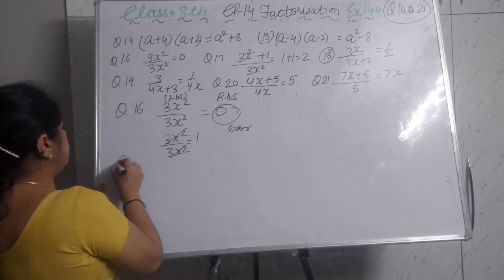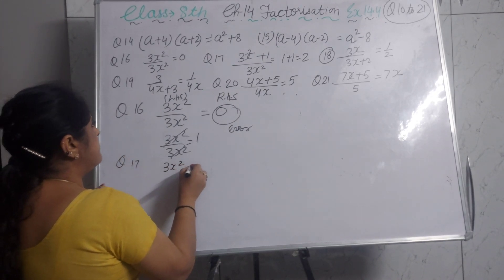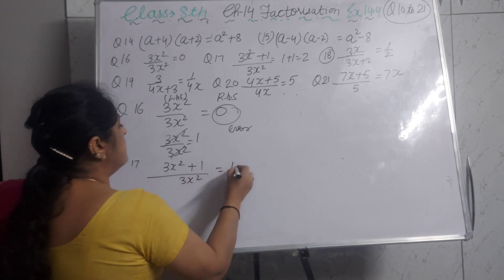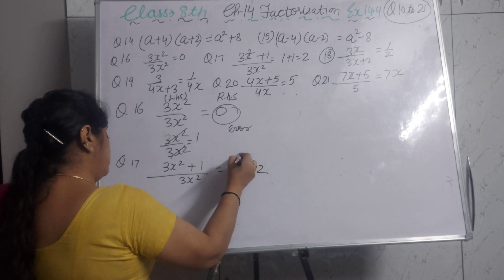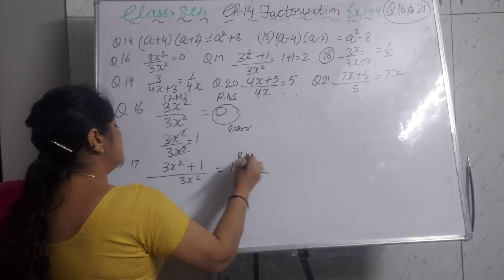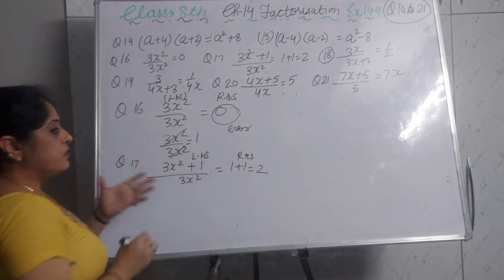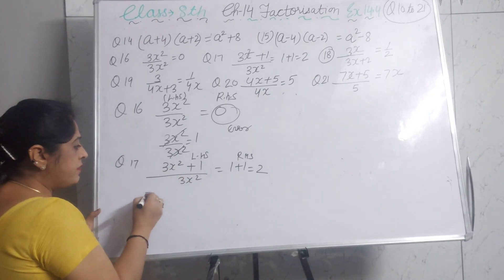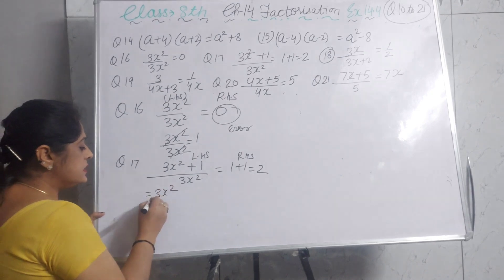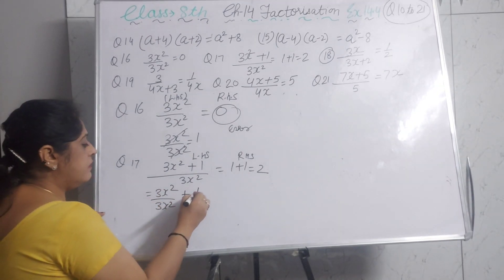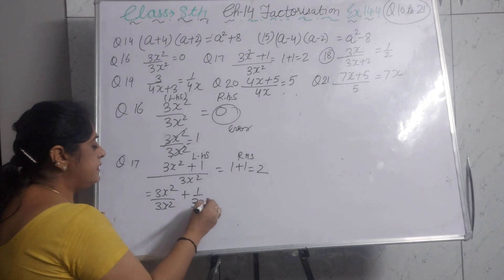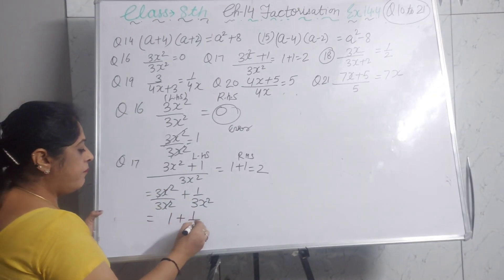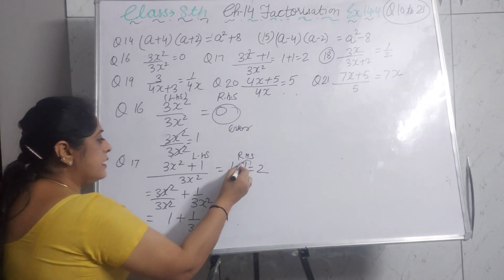Question 17: (3x² + 1) ÷ 3x² is given as 2. We split the fraction: 3x²/3x² + 1/3x². The first part cancels to 1, and the second part remains 1/3x². So the correct answer is 1 + 1/(3x²). The error was incorrectly simplifying 1/3x² to 1, giving a wrong answer of 2.